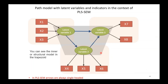Here we have a PLS model with three latent variables. Latent variable one has three items and is a formative measurement model. Latent variable two has three items and is a reflective measurement model, because causality runs from the latent variable to the items. Latent variable three has two items and is also a reflective measurement model for the same reason.